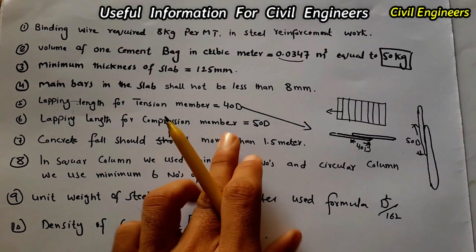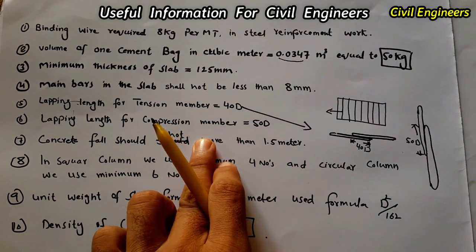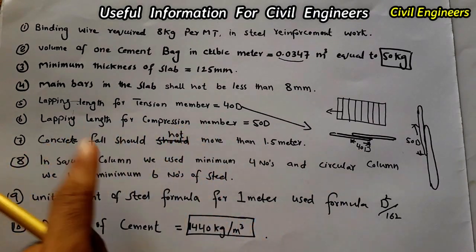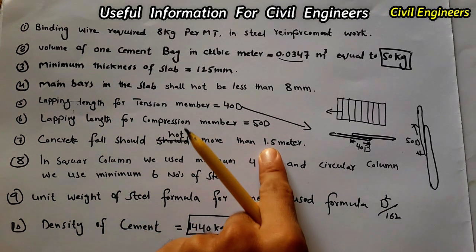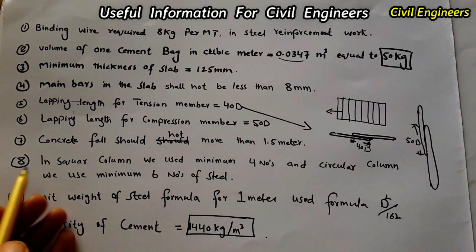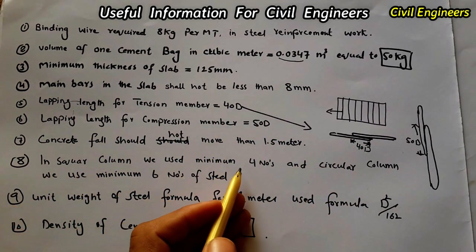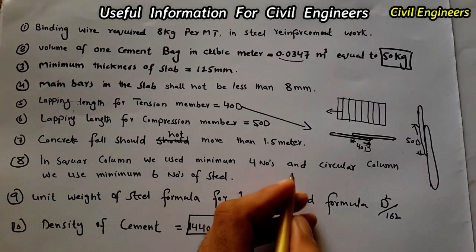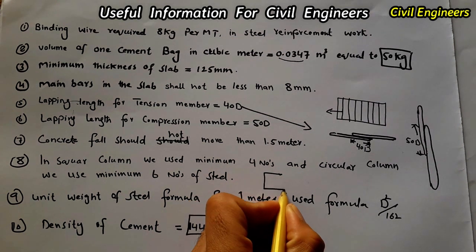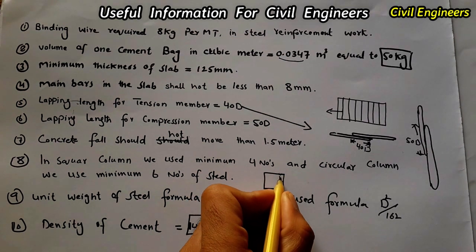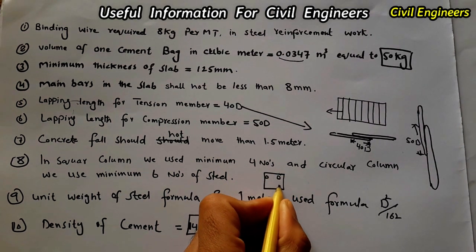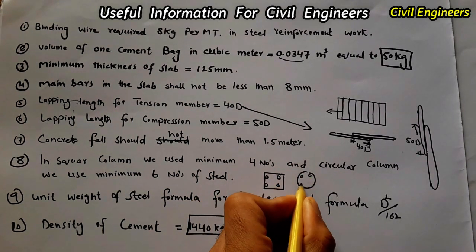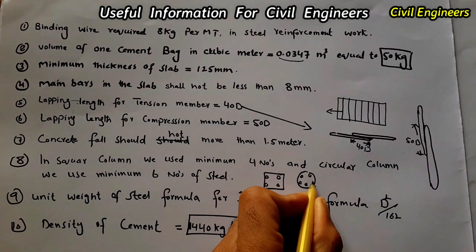Concrete fall should not be more than 1.5 meters when you are concreting a slab. Also keep in mind: in a square column, we use a minimum of four bars of steel, and in a circular column, we use a minimum of six bars of steel.